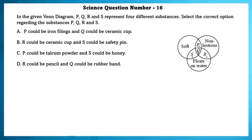Science question number 16. In the given Venn diagram, P, Q, R and S represent 4 different substances. Since Q is in the middle, it has to satisfy all 3 properties. In options A and D there is Q. Q could either be a ceramic cup or a rubber band. One of the properties of Q is soft — a ceramic cup can't be the answer because it is hard, not soft. So we take option D. Q is soft, non-lustrous and floats on water, which are all properties of a rubber band. Similarly, R can be a pencil — non-lustrous and floats on water. So the answer is D.